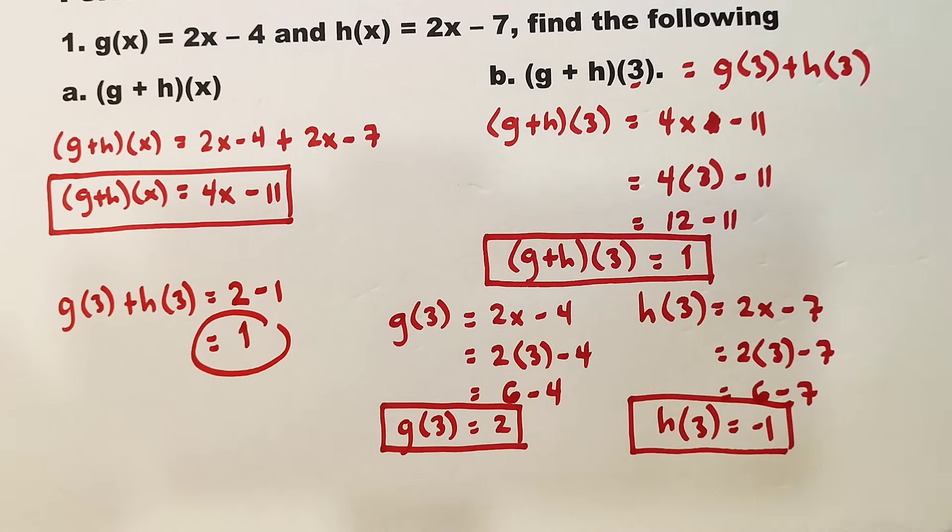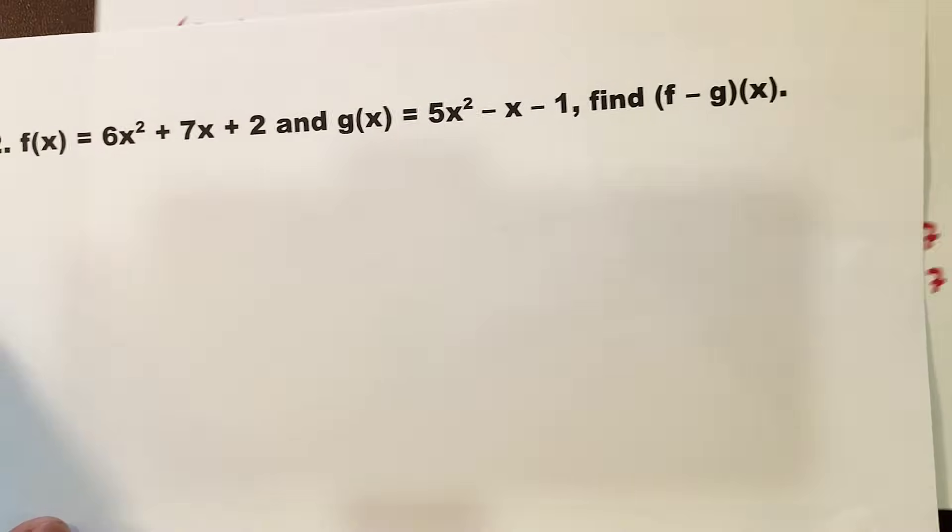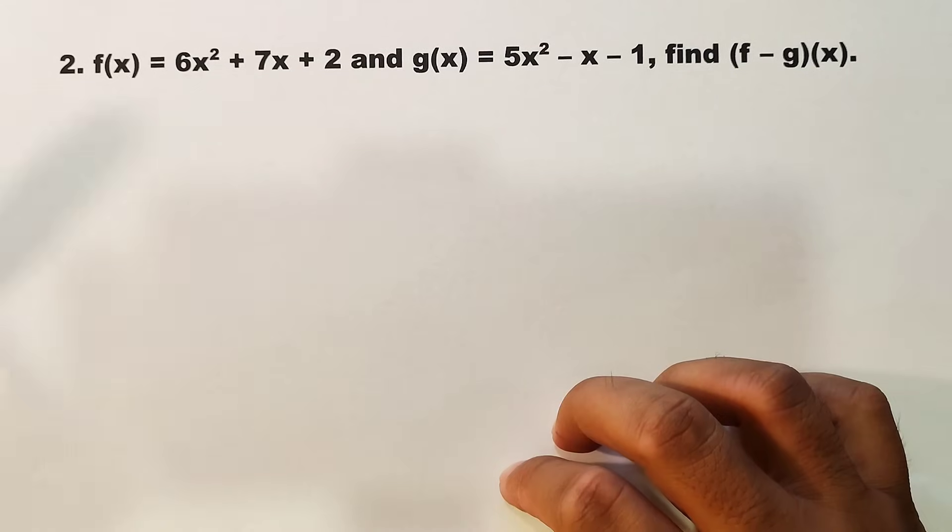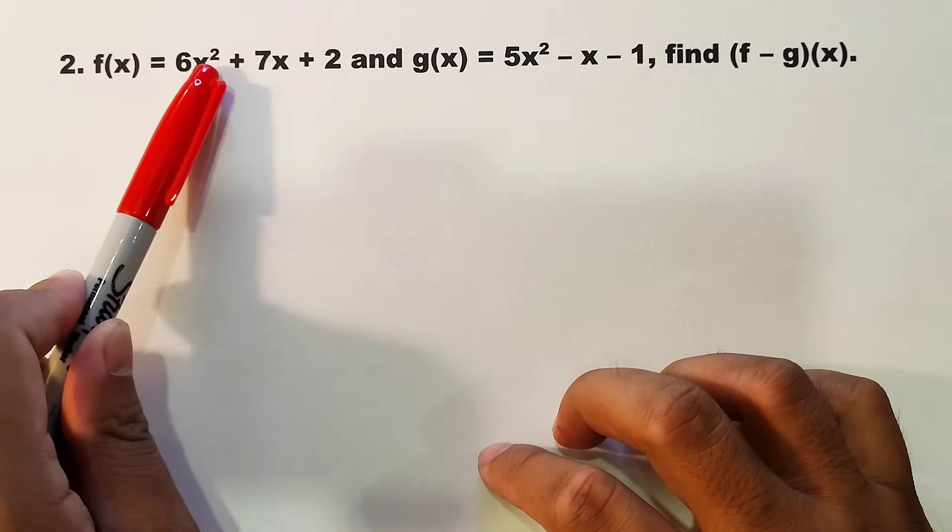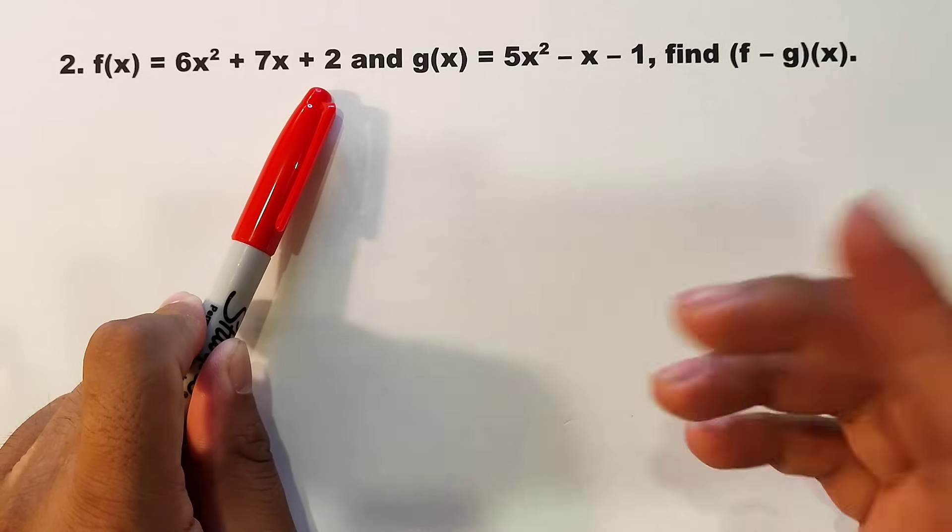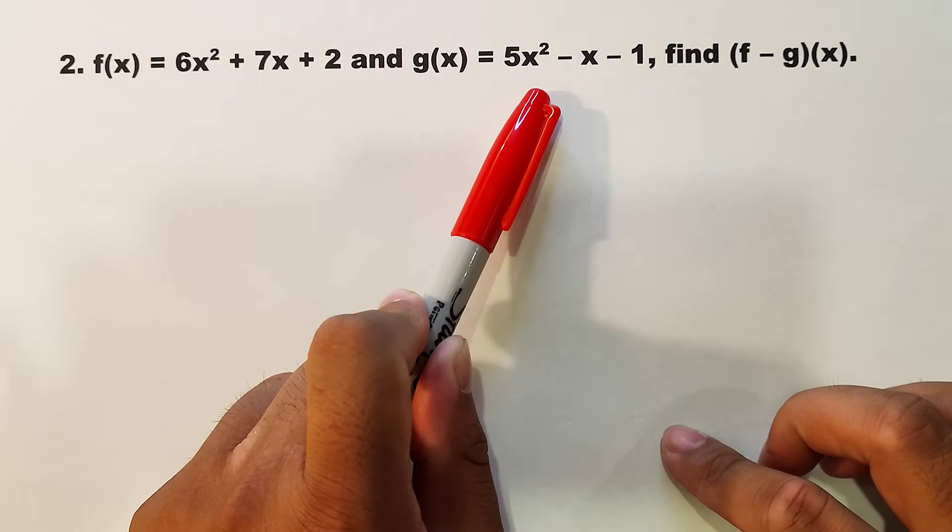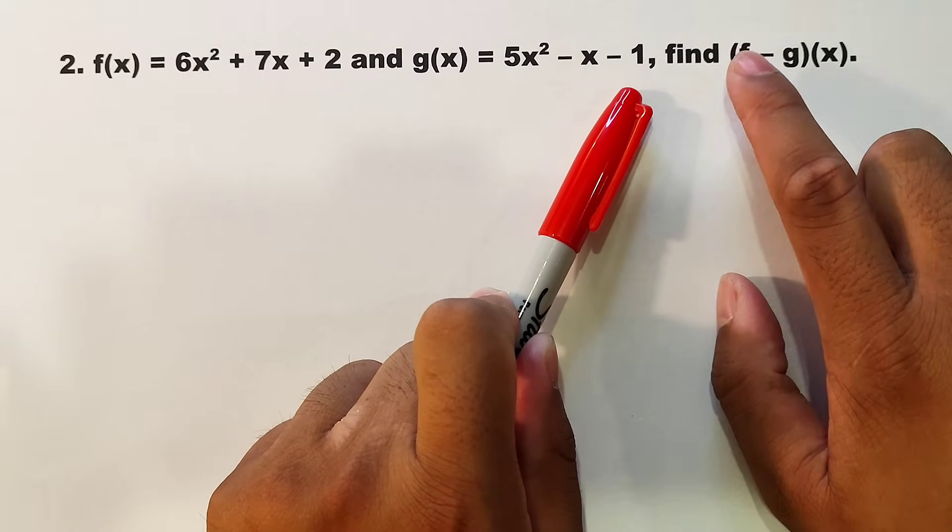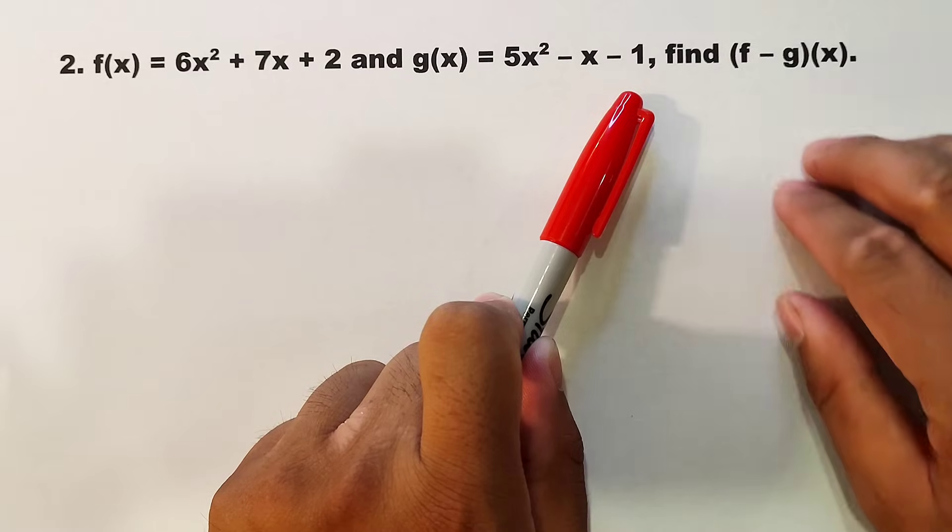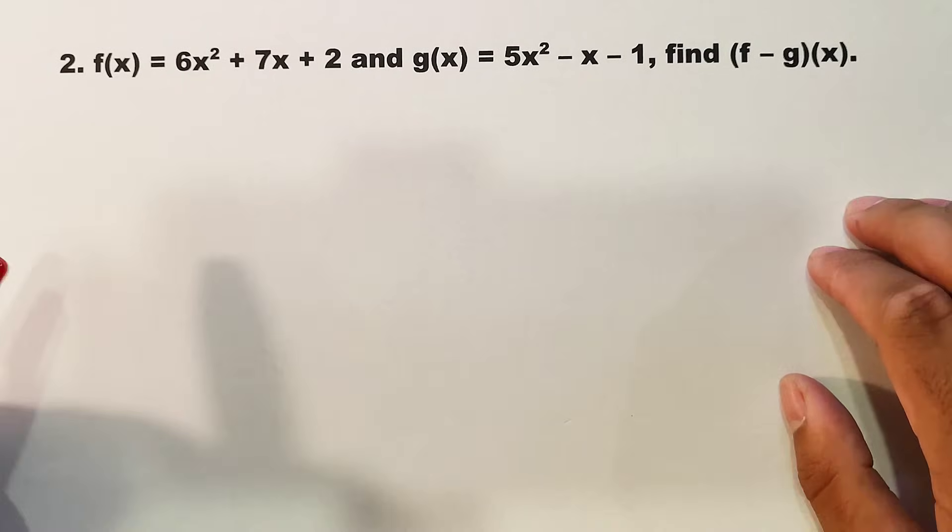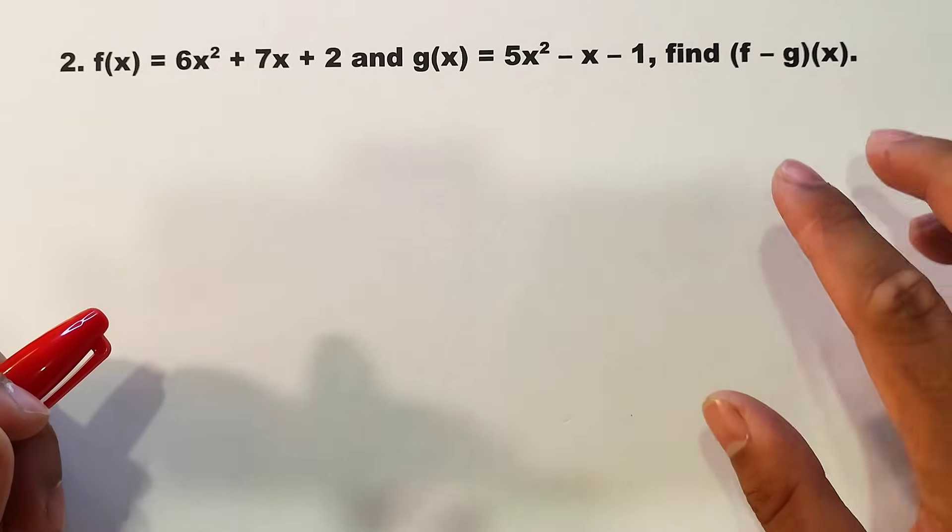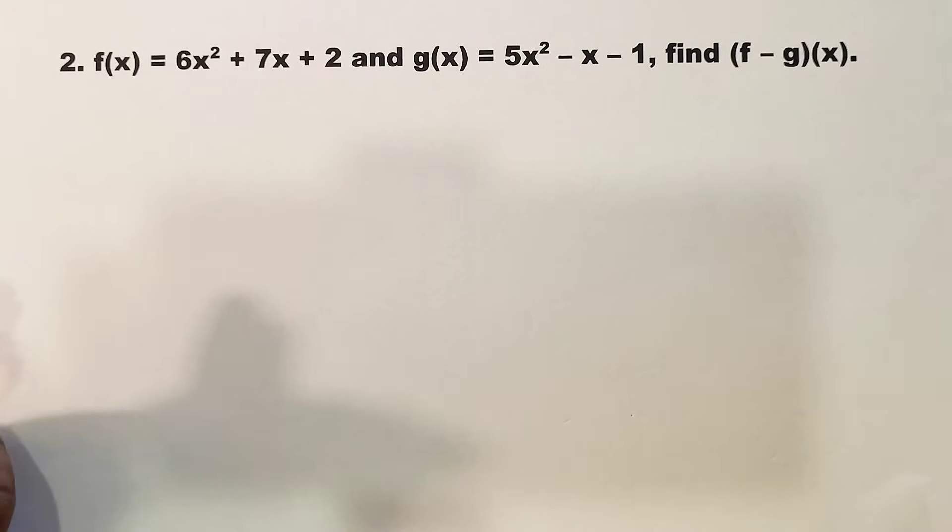Now let's proceed to example number 2. For example 2, we have subtraction of functions. We are given f(x) = 6x² + 7x + 2 and g(x) = 5x² - x - 1. We are asked to find (f - g)(x). When it comes to subtraction, be careful about the arrangement. Follow this, because if you make a mistake in substitution or placement of the function, you'll get a different answer compared to addition.